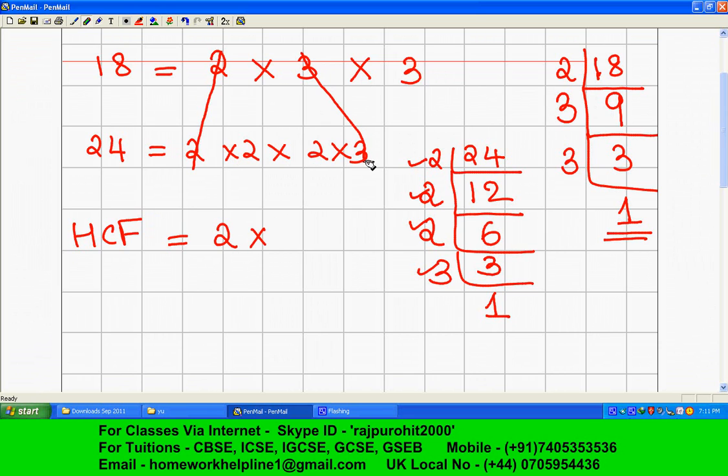Three is there in both, so you write 3 over here. Now here 3 is there and here 2 and 2 are there, so there is nothing more common. Your HCF is 2 multiplied by 3, that is 6. This is your HCF.